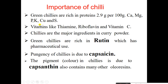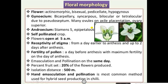Importance of chili: green chilies are rich in protein — 2.9 gram per 100 gram — calcium, magnesium, phosphorus, potassium, copper and sulfur. Vitamins like thiamine, riboflavin and vitamin C (B1, B2 and C). Chilies are the major ingredient in curry powder. Green chilies are rich in rutin which has pharmaceutical use. Pungency of chili is due to capsaicin; the pigment color in chili is due to capsanthin. It also contains many other oleoresins.